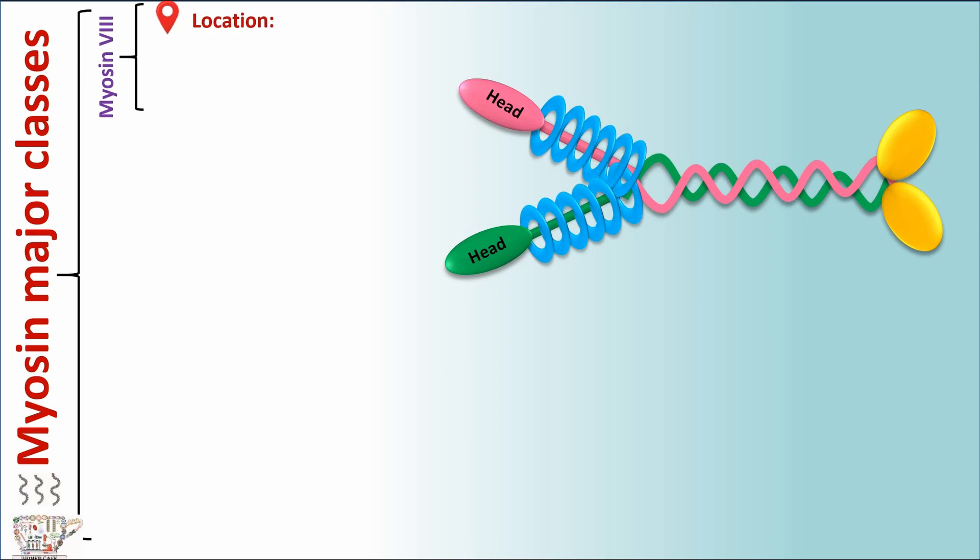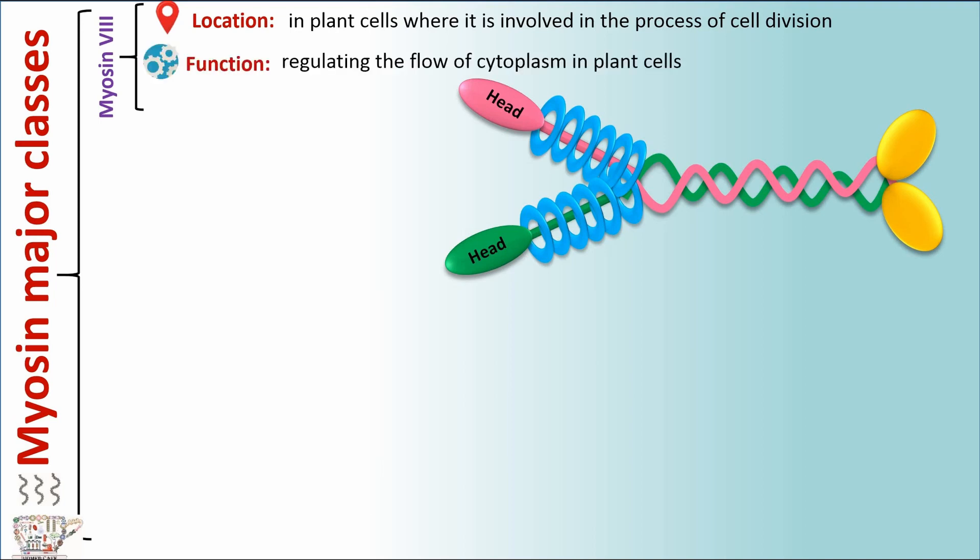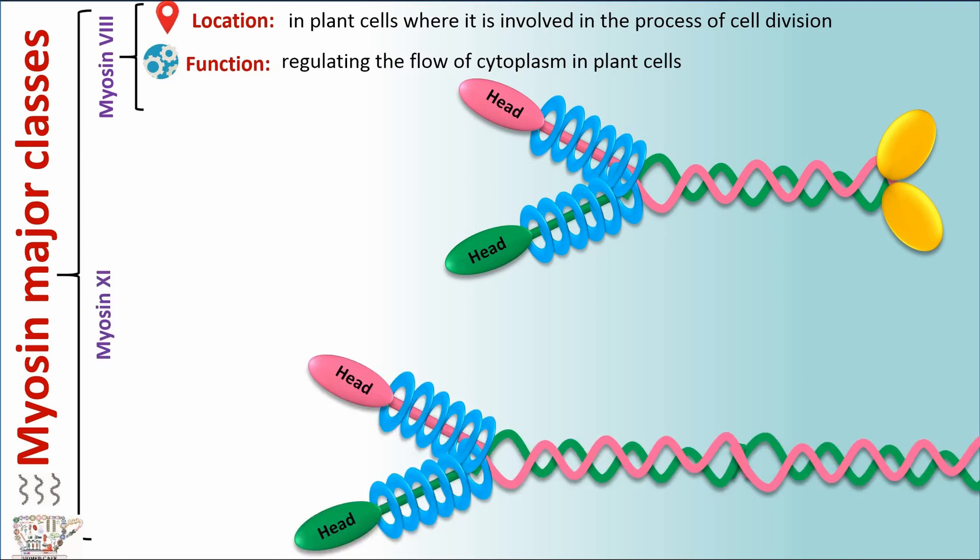It's located in the stereocilia of some mice species. Myosin 8 is located in plant cells where it's involved in the process of cell division and plays a role in regulating the flow of cytoplasm in plant cells. Myosin 11 plays a role in movement of organelles within the cell, such as mitochondria and plastids.